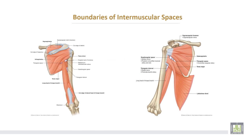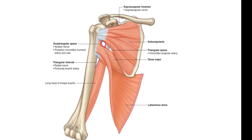This is the quadrangular space, bounded medially by the long head of the triceps, laterally by the surgical neck of the humerus, subscapularis from above, and teres major from below. This is the triangular space, which is medial to the quadrangular space, with teres major downwards, subscapularis upward, and the long head of the triceps laterally. The long head of the triceps separates the quadrangular space laterally from the triangular space medially.